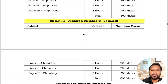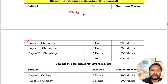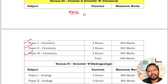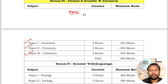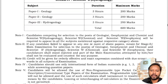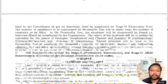For the mains exam in chemistry, there are three papers: Paper 1 is Inorganic Chemistry, Paper 2 is Physical Chemistry, and Paper 3 is Organic and Analytical Chemistry combined. Each paper is 3 hours and 200 marks, giving a total of 600 marks for mains. Combined with the 400 marks from the pre-exam, the total comes to 1000 marks up to this stage.